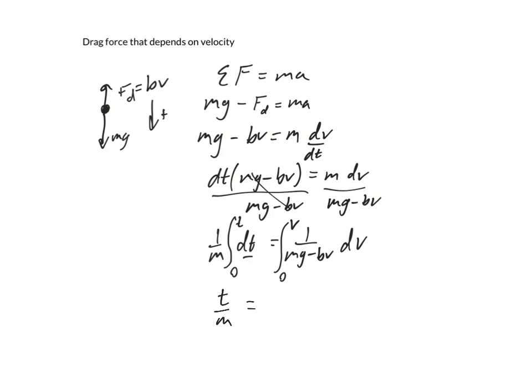u is equal to mg minus bv. And we're going to take the derivative of that, du, is equal to derivative of mg. That's a constant, so that's 0. Minus derivative of bv is just b times dv.